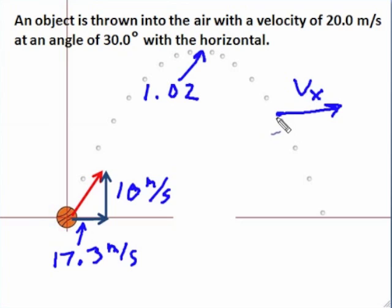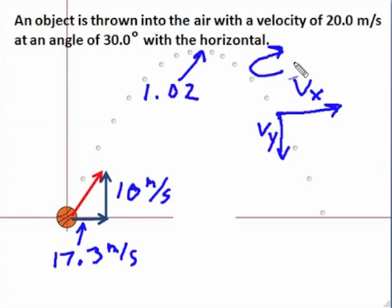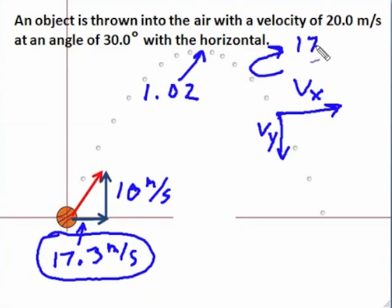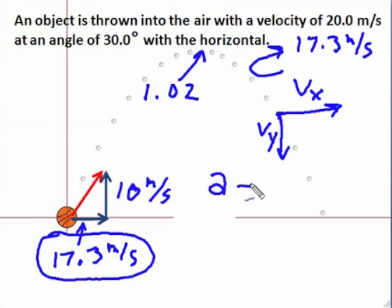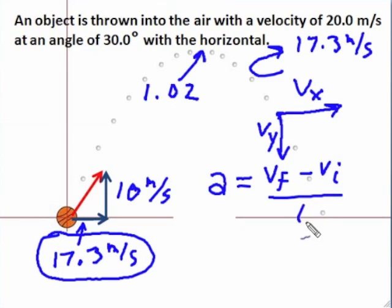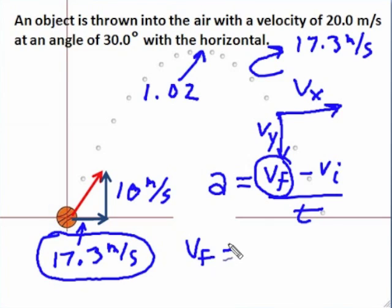We need the horizontal component, and we need a vertical component. And when we add those two components together, we will find the actual velocity, and we'd have to include an angle. The horizontal one is very easy — we already know that. It's constant throughout the flight, and it's 17.3 meters per second. To find the vertical component, we're going to use this equation again. Notice how often this one comes up — you need to memorize this, practice it: VF minus VI over T. And we want to find VF, which is the final velocity after 1.5 seconds in the vertical direction.